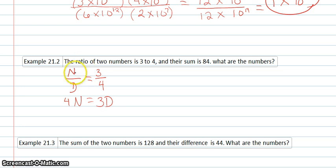Now, if I wanted to, I could just have the n all by itself. So I'd have n equals 3/4d, which this is my preferred method, but you don't have to use that. You could use this. You just apply it a little bit different, and that's okay. And then my next equation says their sum is 84. So the numerator plus the denominator equals 84.